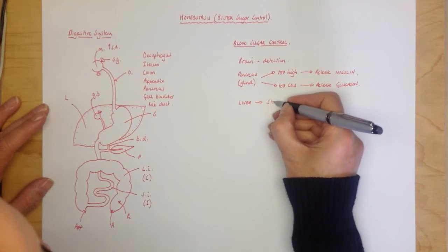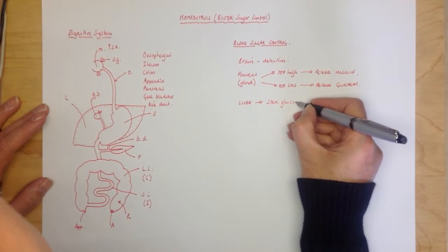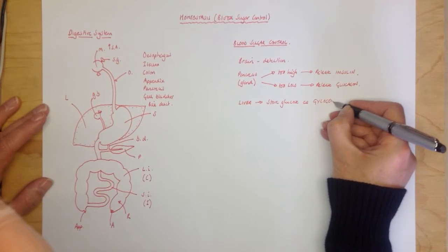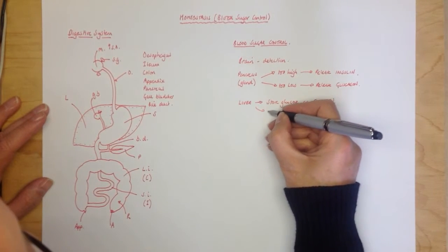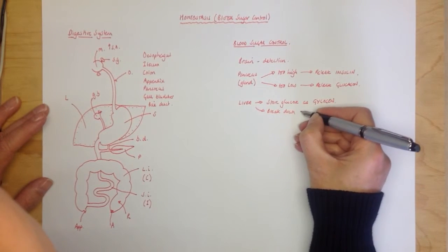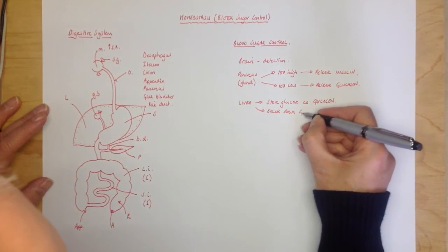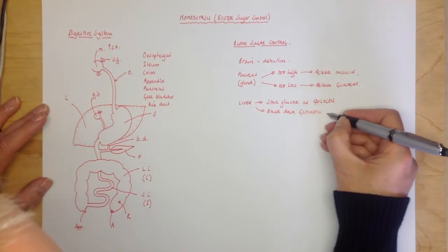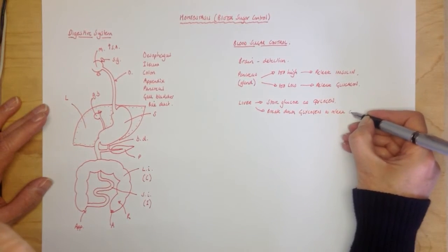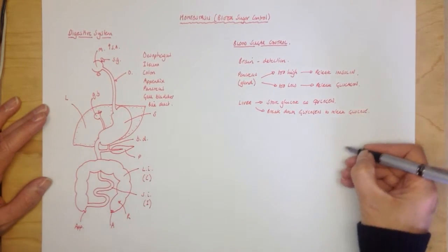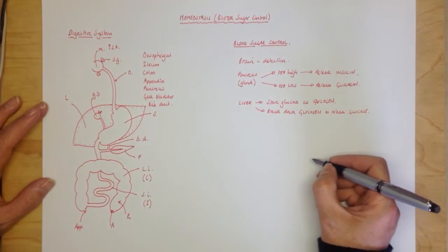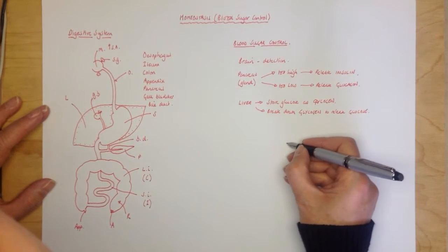Now your liver can either store the glucose or release the glucose. And it will either store glucose as glycogen, or it will break down glycogen to release glucose. Now people get confused by this because glycogen and glucagon have such similar names. So if you think of it like this, it's a bit easier.